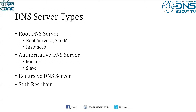Root servers are special servers labeled A to M. There are instances - copies - of those name servers distributed across the world. Authoritative name servers typically have at least a master and a slave server for a given domain, if operated by a professional DNS service provider.